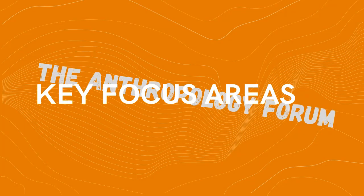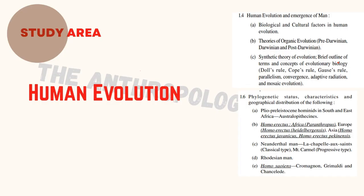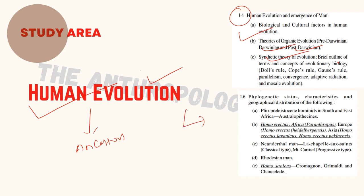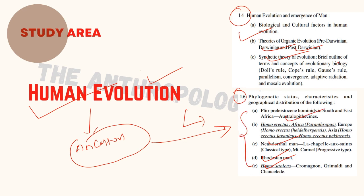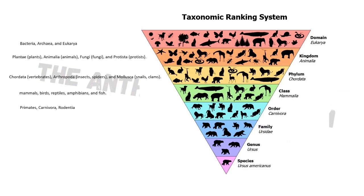Let's discuss the key focus areas of biological anthropology in detail. One key focus area is the study of human evolution — how modern humans have evolved over a period of time and who their ancestors are. Human evolution will be studied in syllabus 1.4, covering theories like Darwinian, post-Darwinian, and synthetic theories, as well as factors that influenced human evolution. Human ancestors such as Homo habilis, Neanderthal man, and Australopithecus will be discussed in detail under syllabus 1.6.